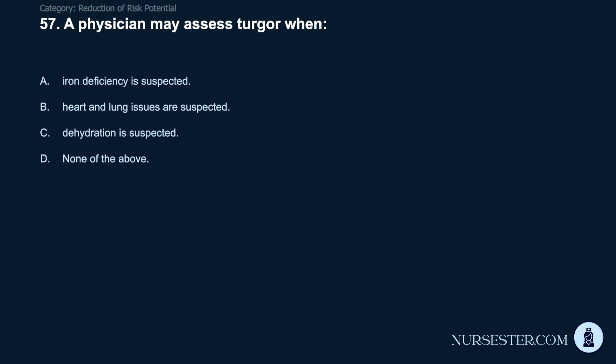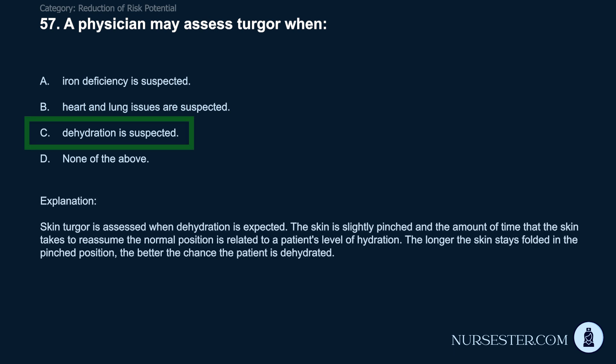Question 57: A physician may assess turgor when: A) iron deficiency is suspected. B) heart and lung issues are suspected. C) dehydration is suspected. D) none of the above. Correct answer: C. Dehydration is suspected. Skin turgor is assessed when dehydration is expected. The skin is slightly pinched and the amount of time it takes to reassume normal position relates to the patient's level of hydration. The longer the skin stays folded in the pinched position, the greater the chance the patient is dehydrated.